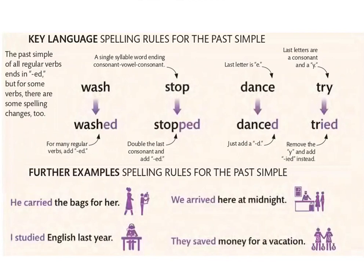'Dance' ends in E already, so we just add D: dance → danced. 'Try' ends in Y — we remove the Y and add -IED: try → tried. I tried to dance last night — حاولت نرقص البارح. The verb 'carry' also ends in Y: carry → carried — he carried the bags for her.